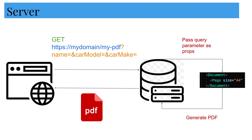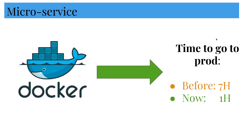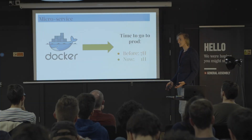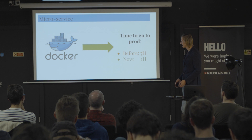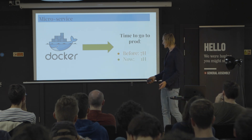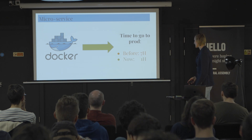We didn't want to do this from scratch for every project, so we created a library and packaged everything in Docker — including the Babel configuration, the server, and the props-passing improvements. Before, it took at least one day to deploy a PDF to production. Two weeks ago on one of our projects, it took just one hour to do it — really a great improvement.